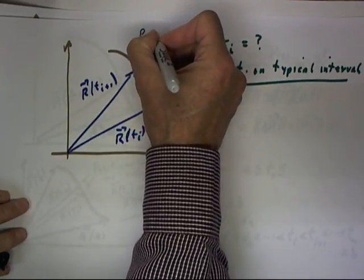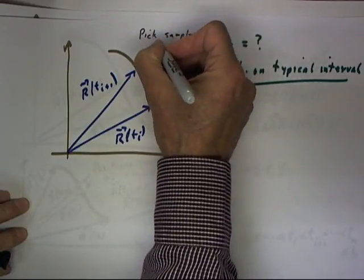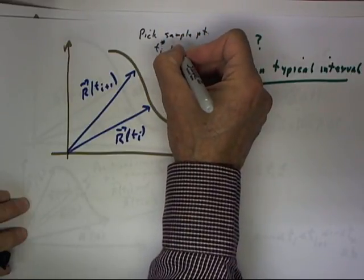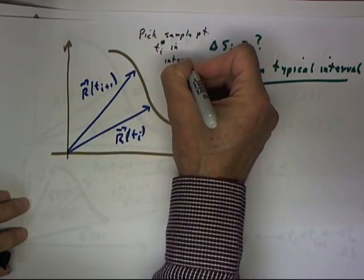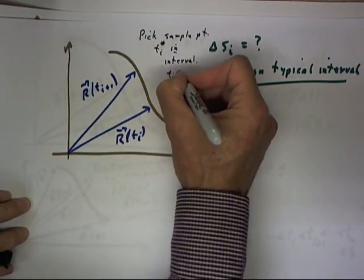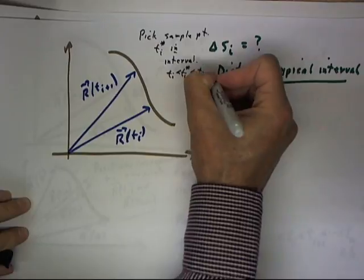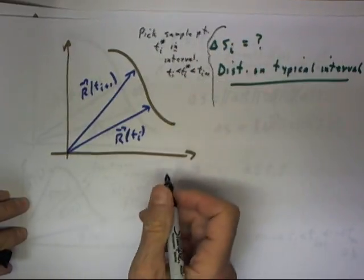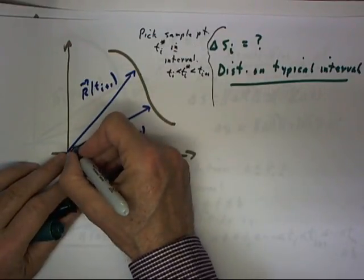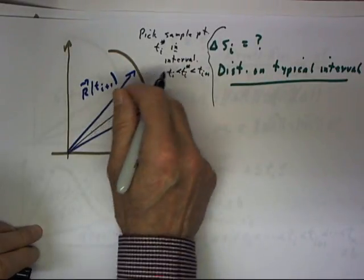What we do is we're going to pick a sample point, t sub i star, in our interval. So that t sub i is less than t sub i star, less than t sub i plus 1. At that instant, the r vector will be somewhere between here and here, perhaps here. This can be a random selection.